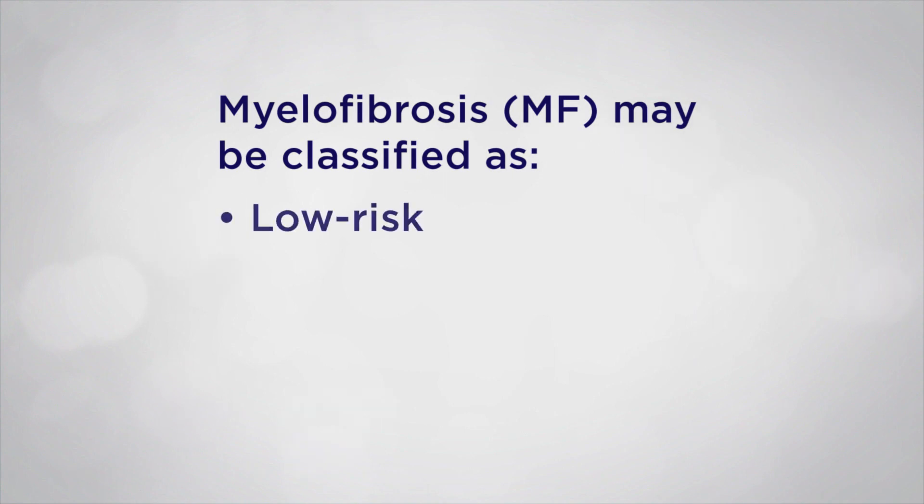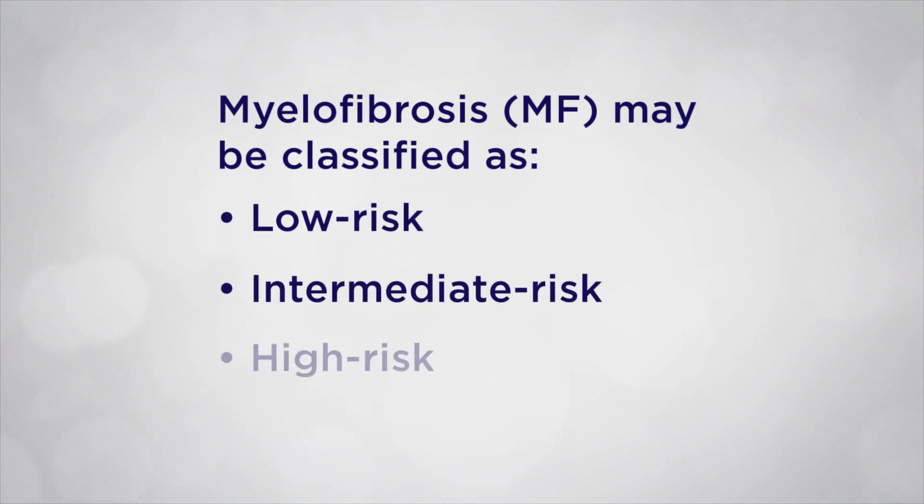How do these systems work? They identify specific risk factors that are associated with MF — for example, anemia or low red blood cell counts. They then combine these risk factors to generate a score. The score is then used to assign a risk level to an individual patient. The risk levels are low risk, intermediate risk, and high risk. Researchers have been able to determine estimated typical life expectancy in MF based on each of these levels.